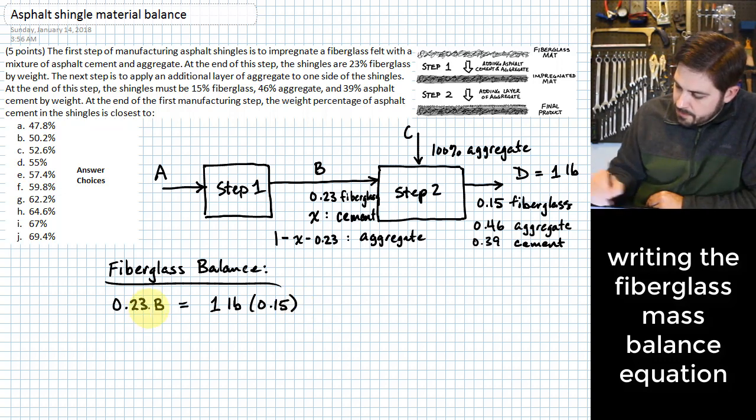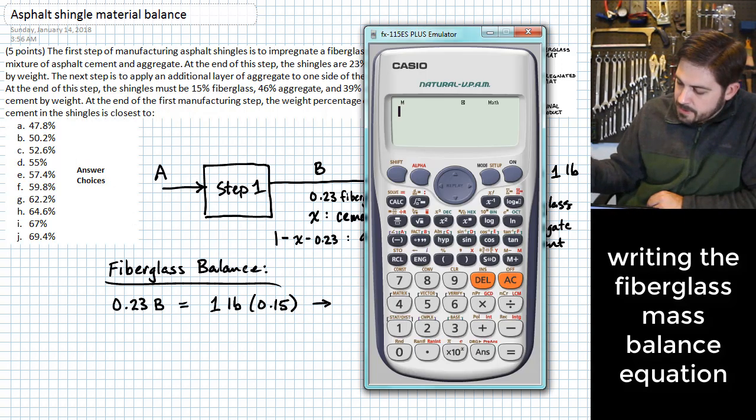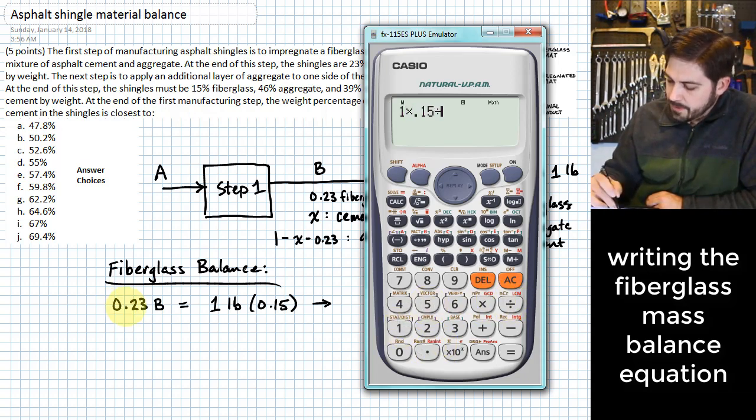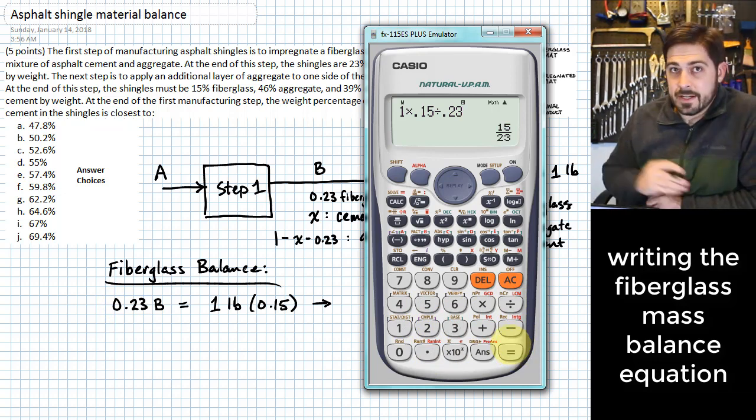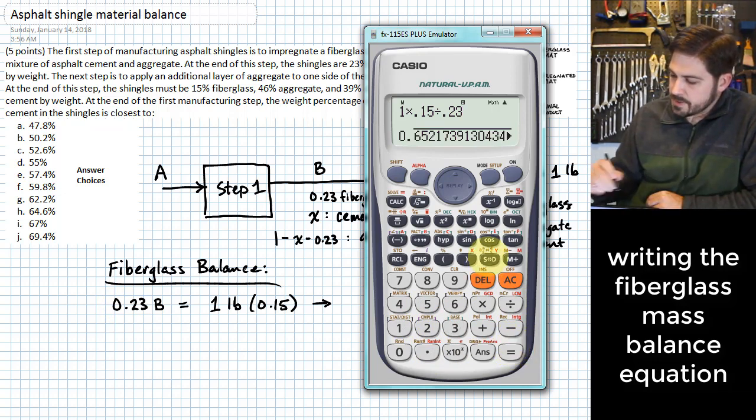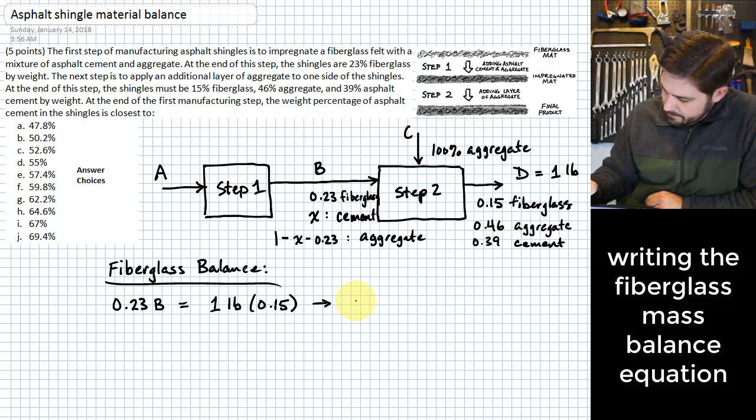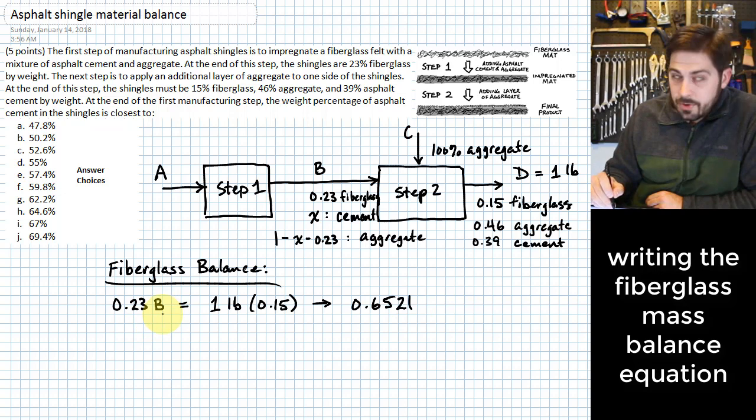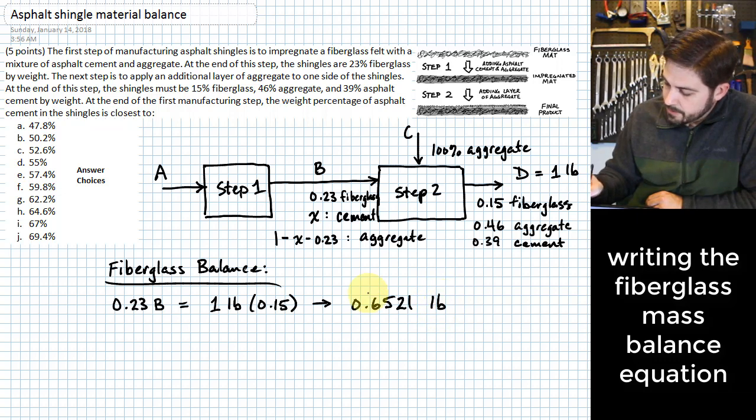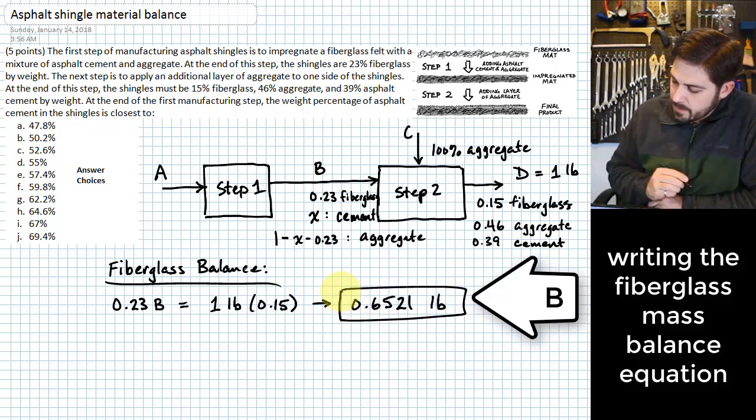And so this is not actually that hard of an equation to solve. All I have to do is plug in one pound times 0.15 divided by 0.23. And that gives me the result that I need in that first step. It says that I need 0.6521 pounds. Well, since we had a pound at the beginning, this ends up being a pound right here as well. Well, is that what it's asking for? No, we're not quite there yet.